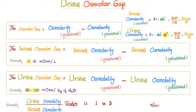What's the urine osmolar gap? Just like any gap — it's osmolality measured by the osmometer, minus osmolality calculated by the equation. It's the difference between what's measured and what was predicted via the equation.